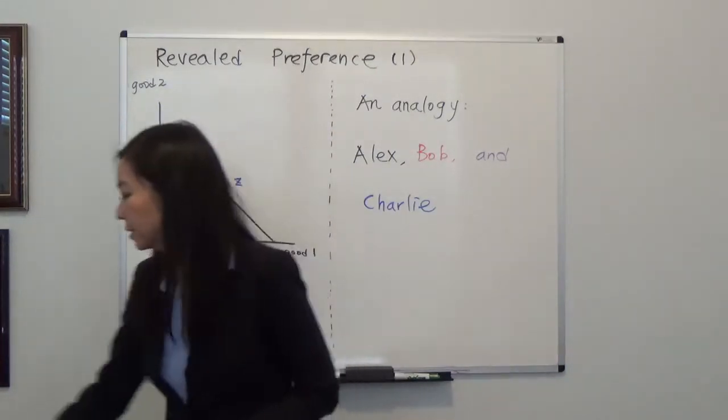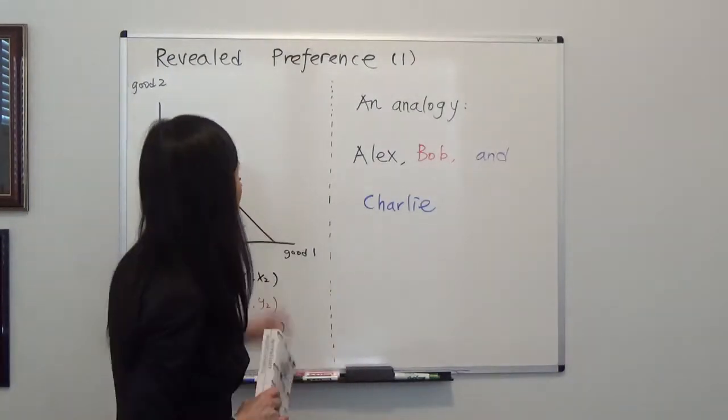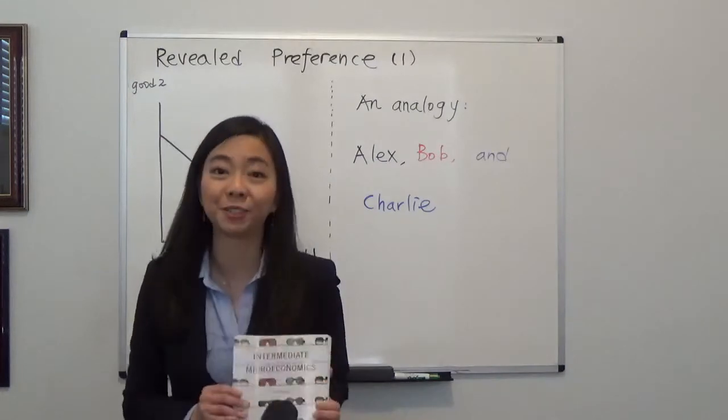And just for reference, I am using Hall Varian's Intermediate Microeconomics book, and revealed preference is in Chapter 6.